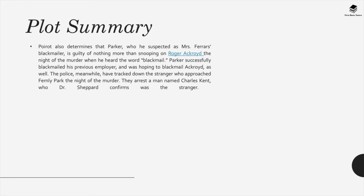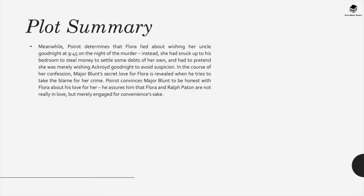Poirot also determines that Parker, whom he suspected as Mrs. Ferrars's blackmailer, is guilty of nothing more than snooping on Roger Ackroyd the night of the murder when he heard the word blackmail. Parker successfully blackmailed his previous employer and was hoping to blackmail Ackroyd as well. The police meanwhile have tracked down the stranger who approached Fernley Park the night of the murder. They arrest a man named Charles Kent whom Dr. Shepard confirms was the stranger. Meanwhile, Poirot determines that Flora lied about wishing her uncle good night at 9:45 on the night of the murder. Instead, she had snuck up to his bedroom to steal money to settle some debts of her own.